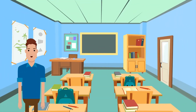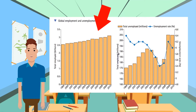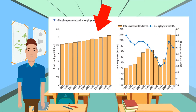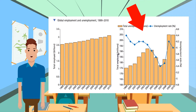What do global trends in employment look like? As you can see from the graph, employment has increased over time in line with growth in the economy or population, but unemployment has varied over time with the health of the global economy. We are currently going through a global pandemic which has shrunk the size of the global economy, and unsurprisingly unemployment is rising quickly during this time.